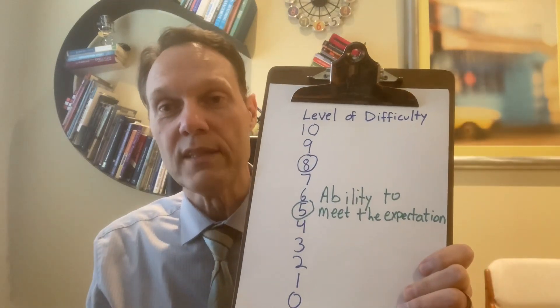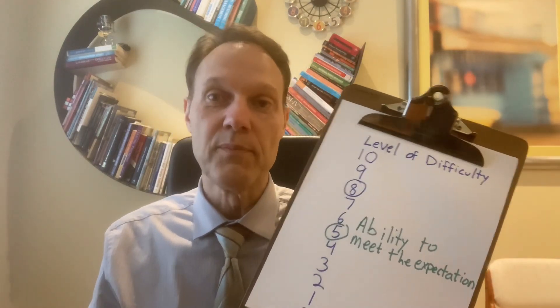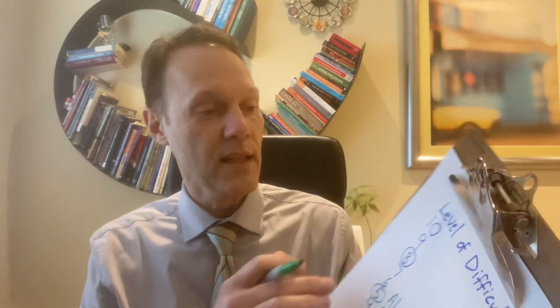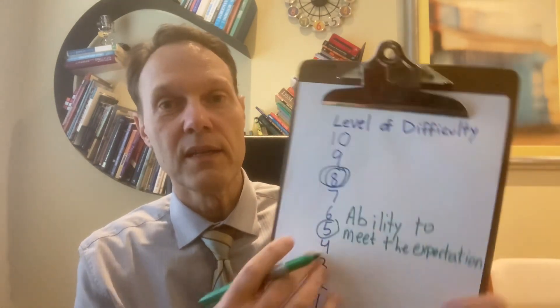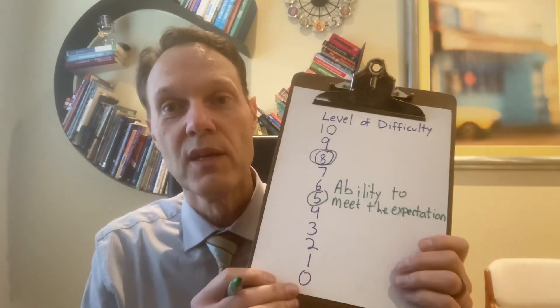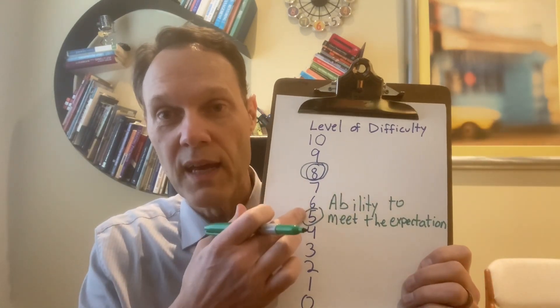This gap affects your thoughts and beliefs about what's going to happen. If the level of difficulty is an eight and your ability to meet it is also eight, your beliefs will be: I'll be fine, I'm going to be able to do this, I'm going to please people and get the advantages. But as the gap widens, thoughts become: I'm not going to make it, they're going to be upset, I'm going to get fired, I'm going to get a low grade, I'm going to look stupid.